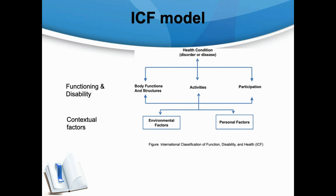Body function and structure domains describe the impairment of anatomical and physiological function of different body systems. The activity and participation domain refers to the limitation or difficulty an individual experiences to perform a particular task in a certain environment, and the restrictions to participate in life situations and interact with society. The contextual factors involving environmental and personal factors are linked to the first three domains.